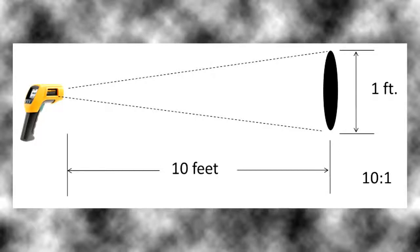The D to S ratio is the ratio of the distance from the IR tool that you're using to the surface that you're measuring.